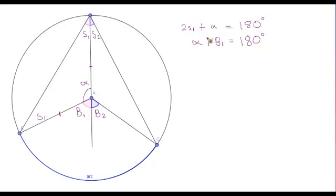Now if we take a look at these equations we can see that they are simultaneous and that we can solve them through substitution because they both equal 180 degrees. So we then get the equation 2S1 plus alpha equals alpha plus B1. Now if we take a look at our new equation we can see that both sides have alpha. So we can take alpha from both sides and then we get the equation 2S1 equals B1.